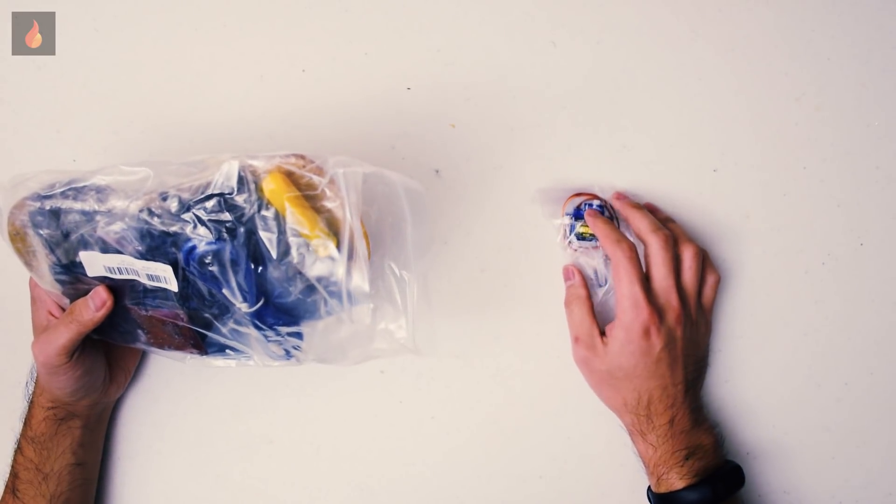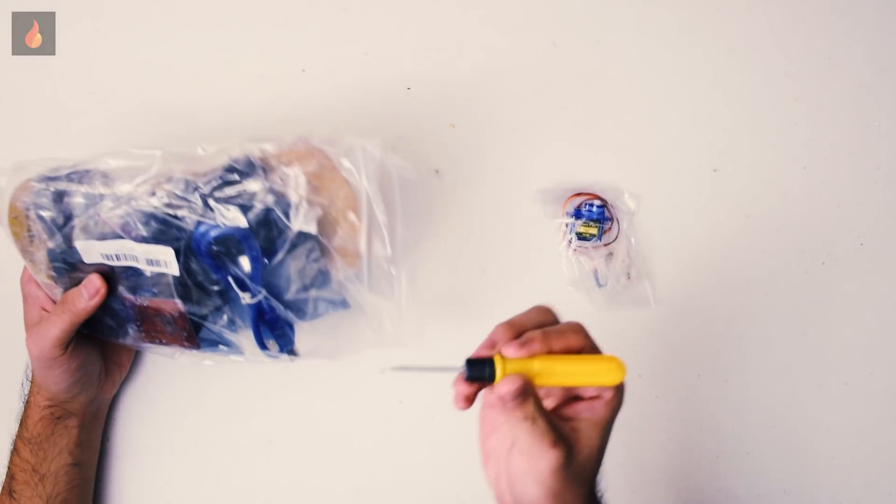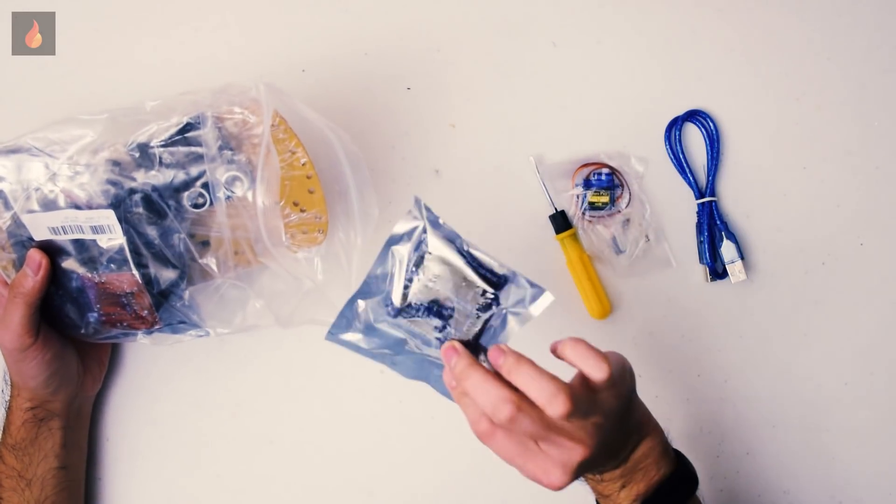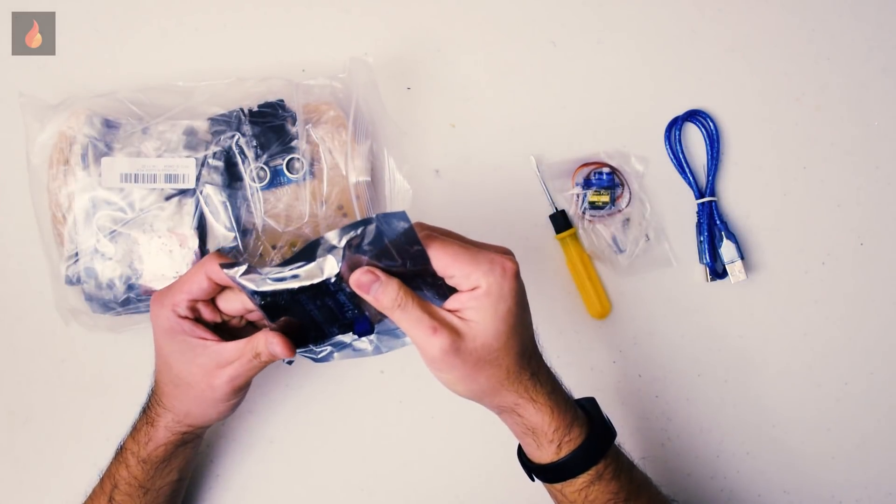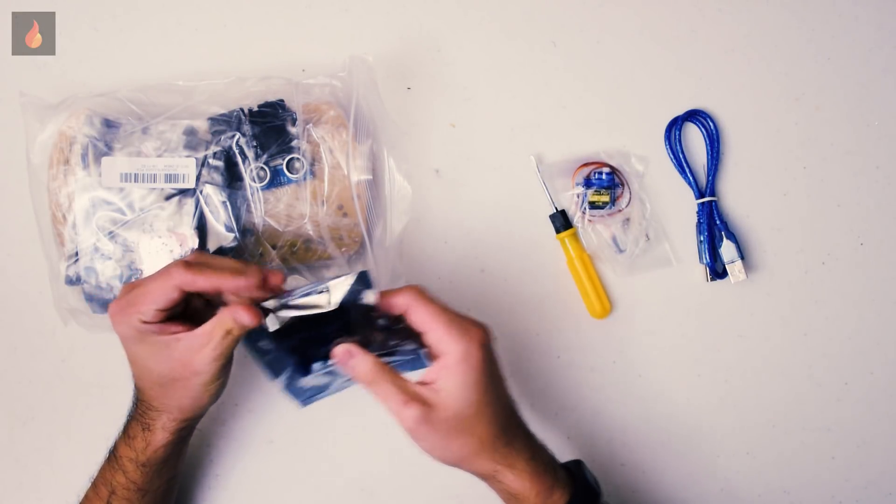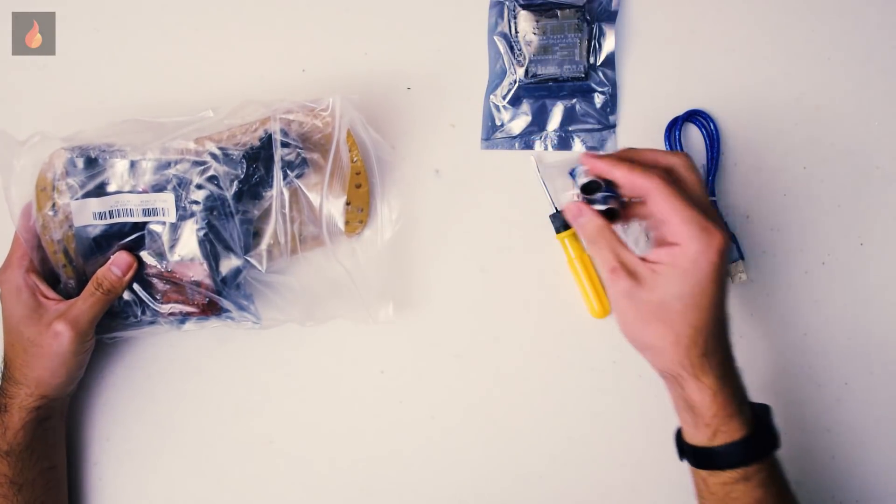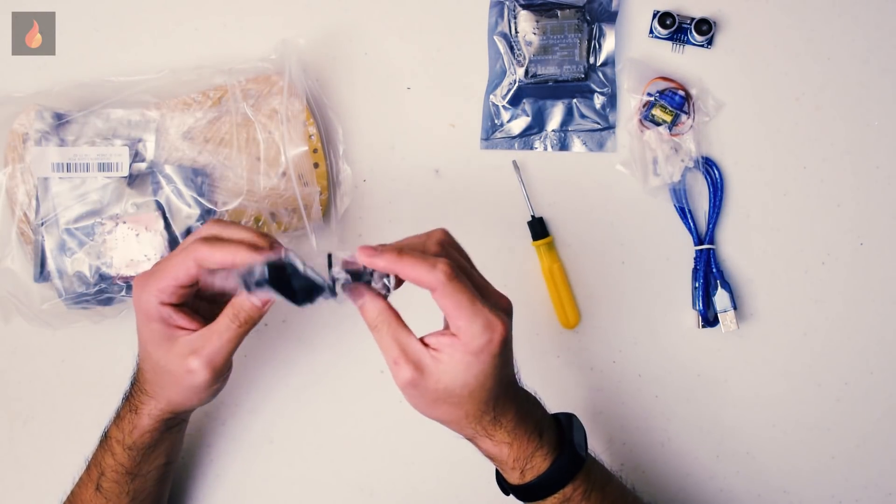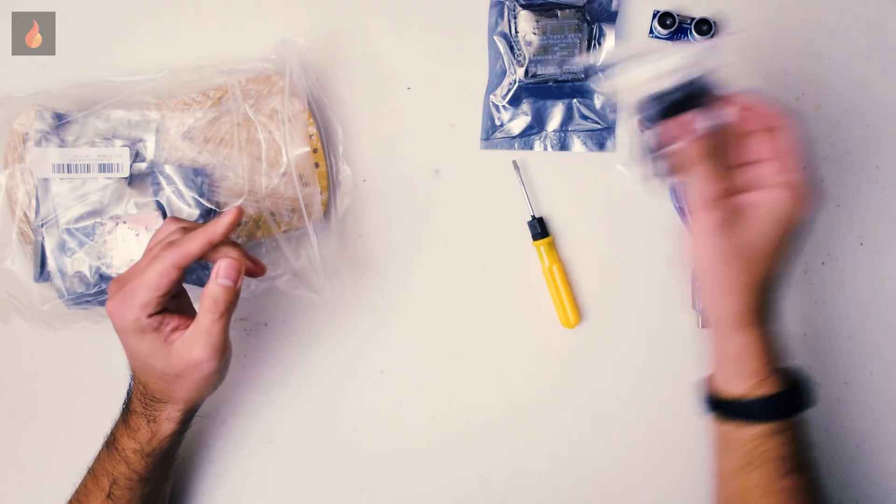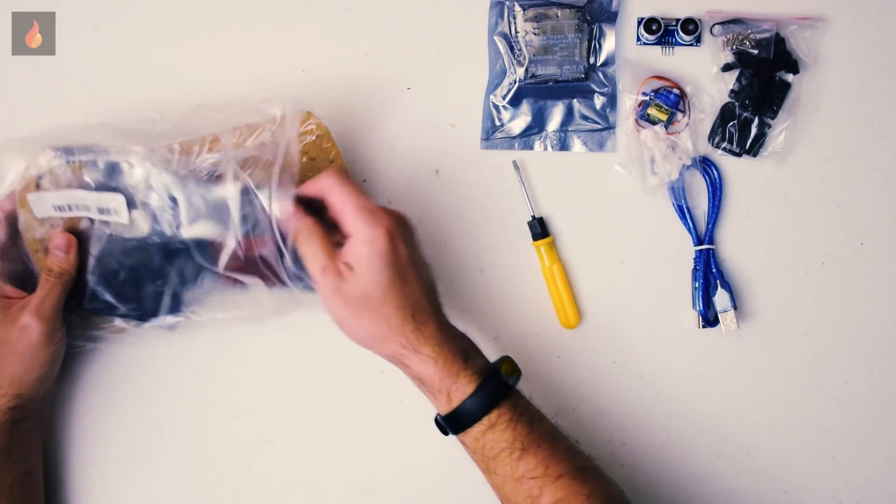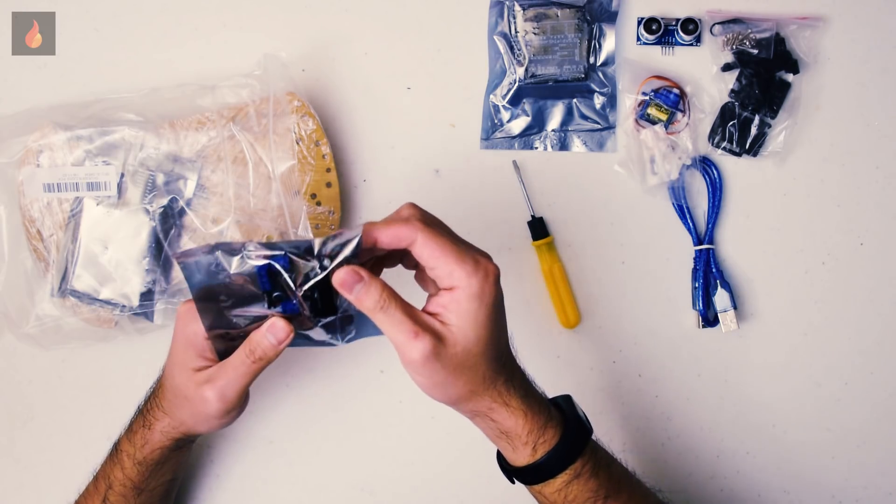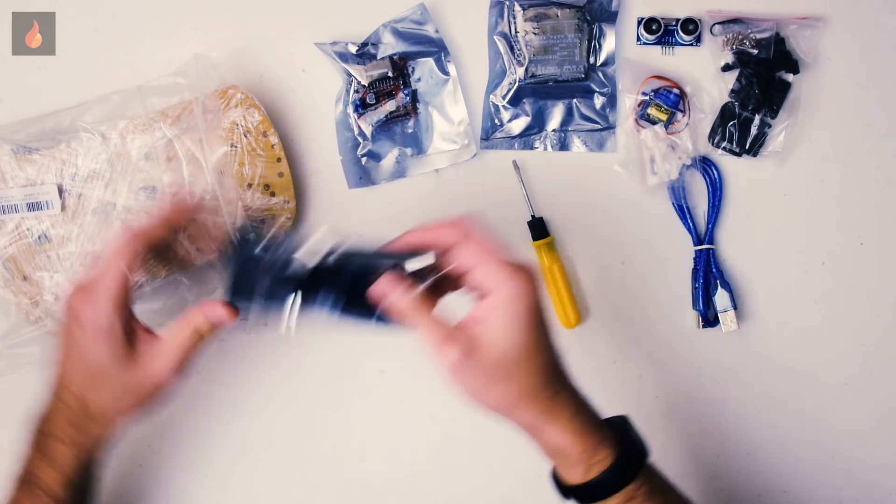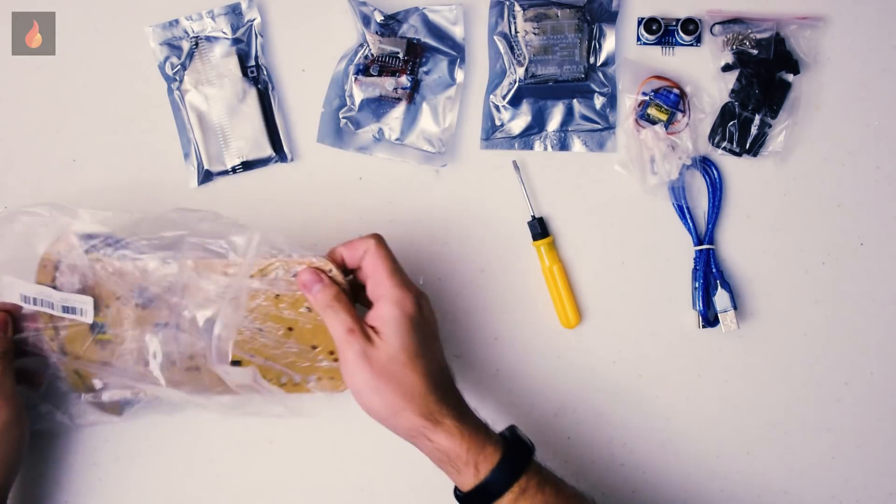This is a servo for the ultrasonic sensor plus screwdriver. USB for Arduino. This looks like an Arduino sensor shield, must be for the ultrasonic sensor, the ultrasonic sensor itself. Some hardware that is supposed to hold the sensor and use a servo to drive it around. This looks like a motor drive. Arduino Uno equivalent.